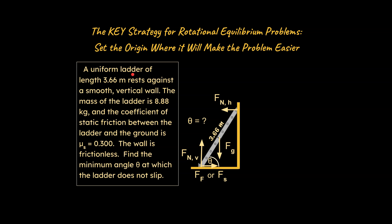The problem says a uniform ladder of a given length rests against a smooth vertical wall. The mass of the ladder is given and the coefficient of static friction between the ladder and the ground is some value. The wall is frictionless — so there's no friction force between the wall and the ladder itself. We need to find the minimum angle at which the ladder does not slip — that's this theta right here. Let me show you how to approach this.